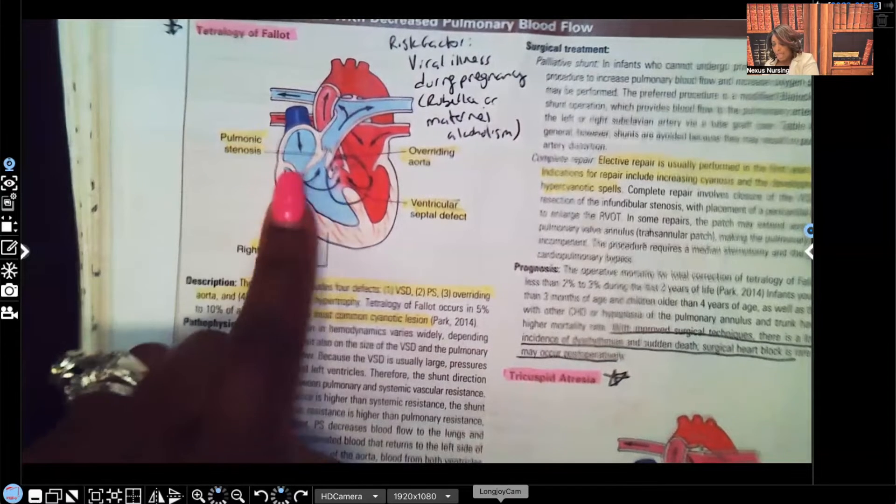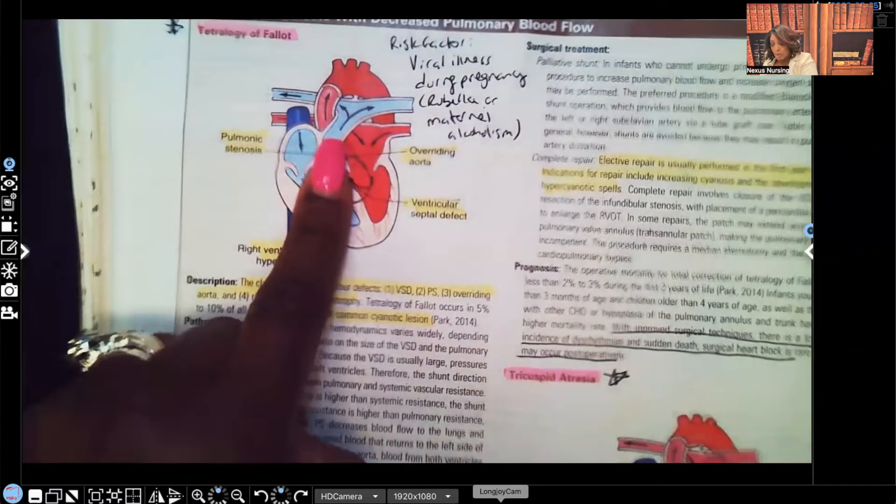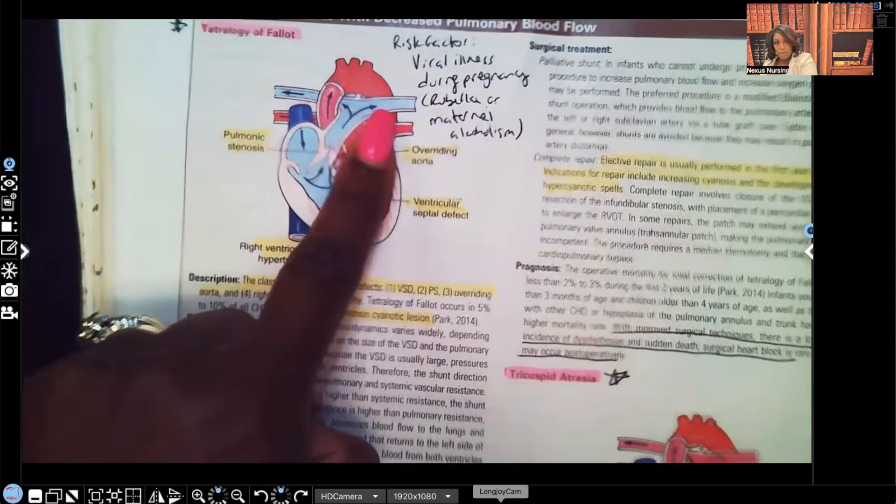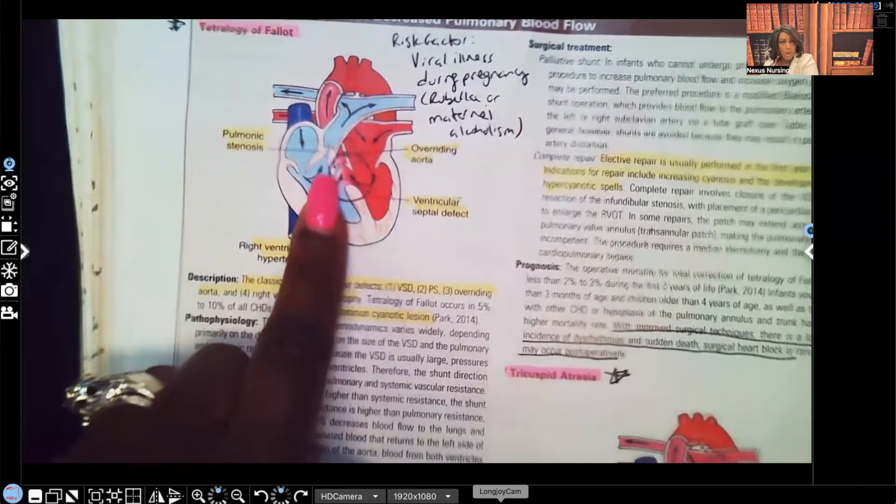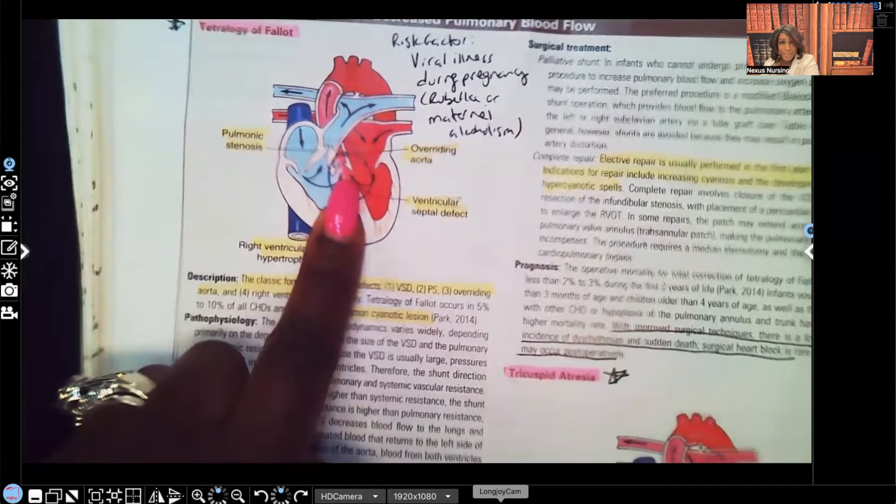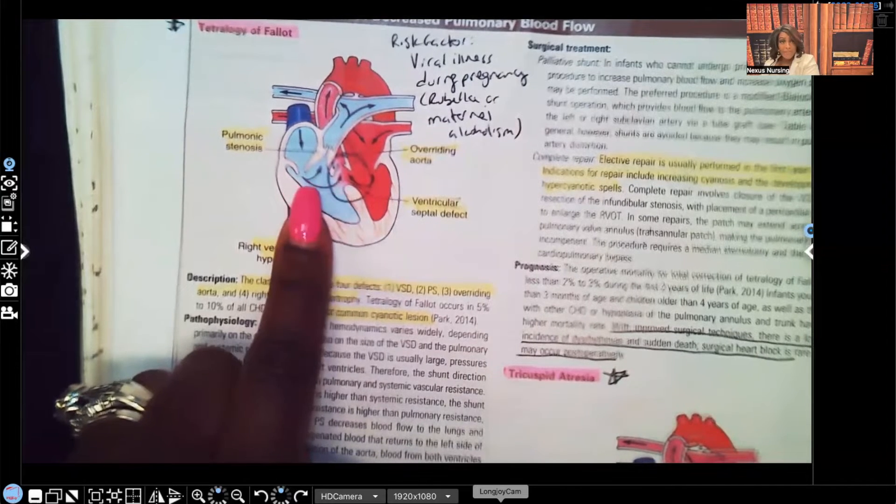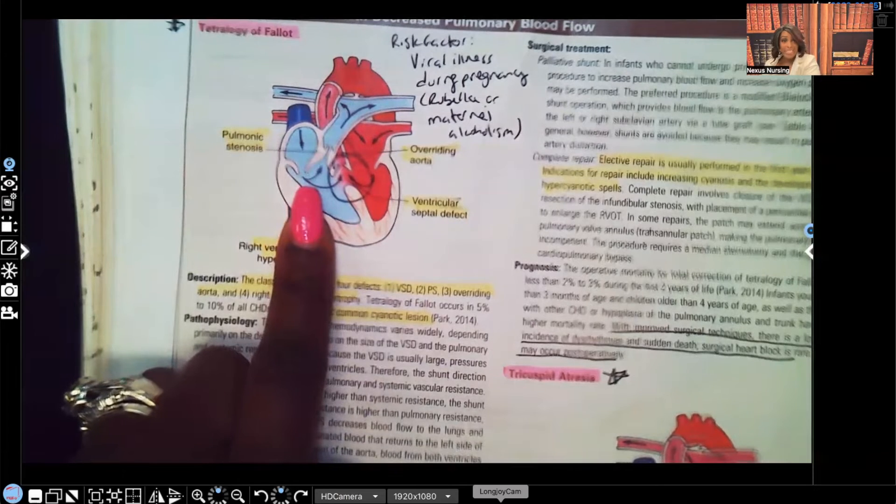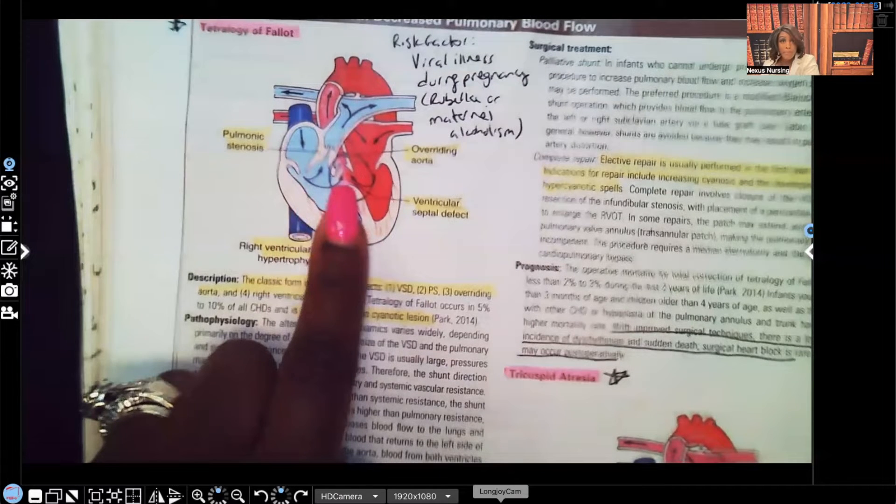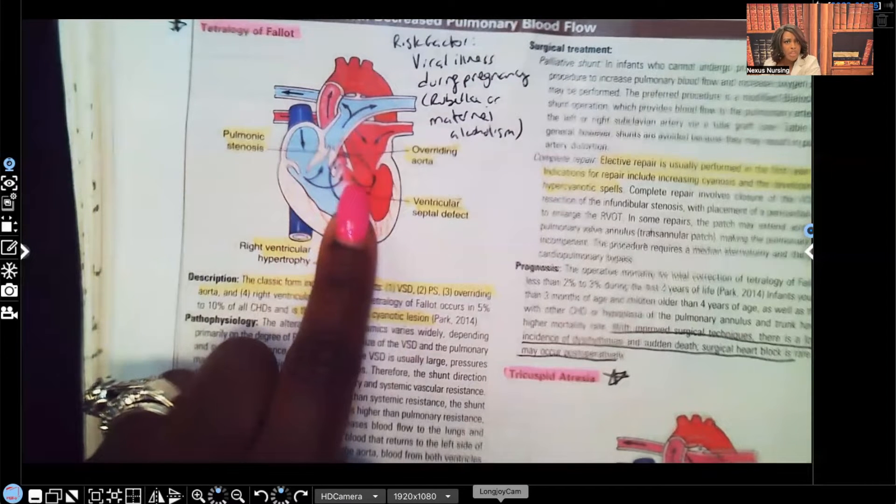So look what's happening. All of this blood is supposed to be going through the pulmonary artery to go pick up oxygen, but look, there's an opening right here where there should not be. This is supposed to be separated. So look what's happening.